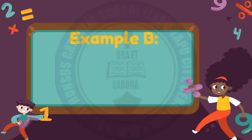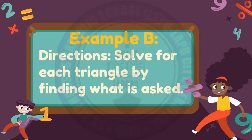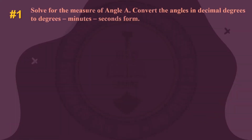Now let's have our Example B. Directions: solve for each triangle by finding what is asked. With the use of the law of cosines we can determine the value or the measures of our angles and sides. Number one: solve for the measure of angle A and convert the angles in decimal degrees to degrees-minutes-seconds form.